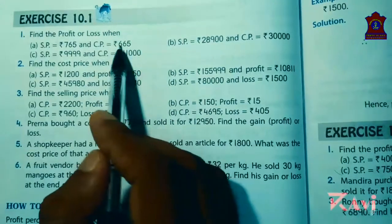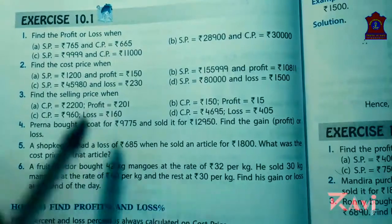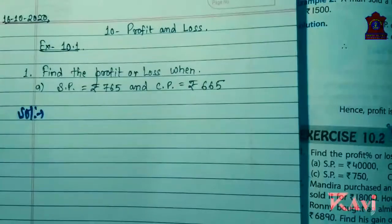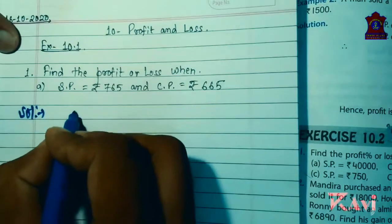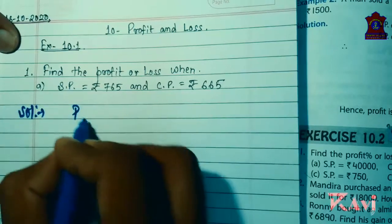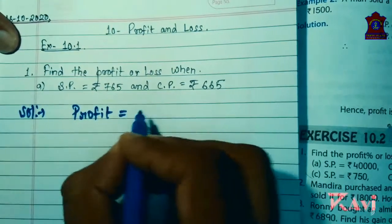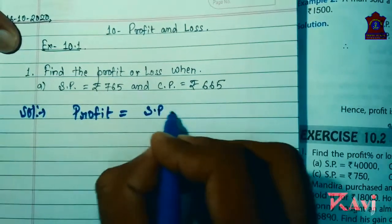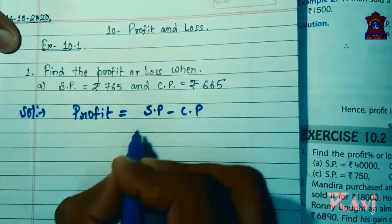SP is greater than CP. When SP is greater than CP, what we are getting? We're getting profit. So use the formula: Profit equals SP minus CP. You need to write the formula always.